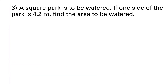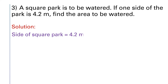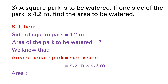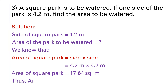Question number 3: A square park is to be watered. If one side of the park is 4.2 meters, find the area to be watered. Side = 4.2 m. Area of square park = side × side = 4.2 × 4.2 = 17.64 square meters. So the area to be watered is 17.64 square meters.